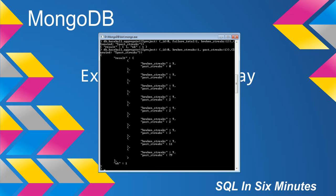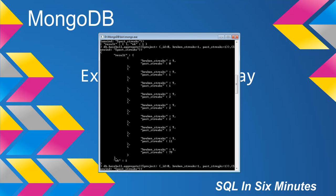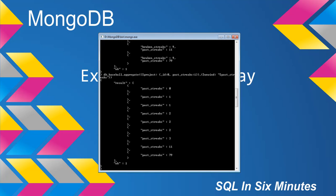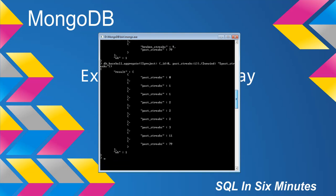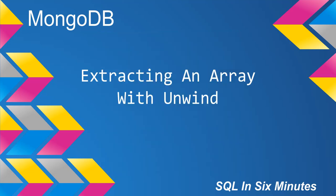If we eliminate fields in the project selection, they won't appear in our sub-documents. If we only wanted to look at just the past_streaks as their own documents, we can do that, and we'd see a collection of past streaks as individually their own documents. We can select a full group of data or take a small selection and break it down individually. Unwind is also useful for getting the count of sub-documents.